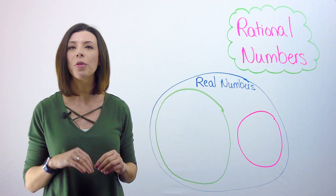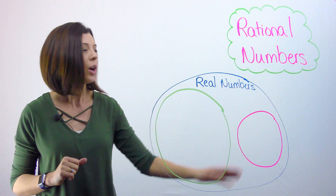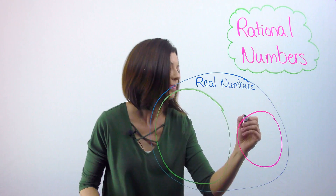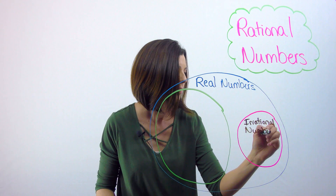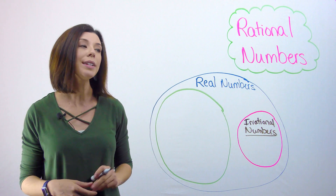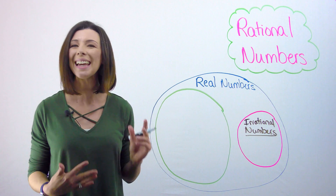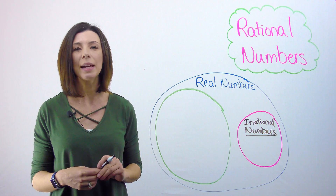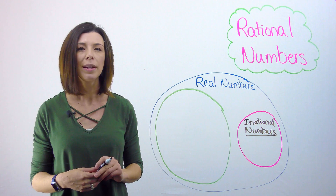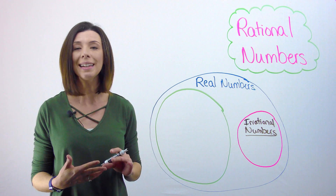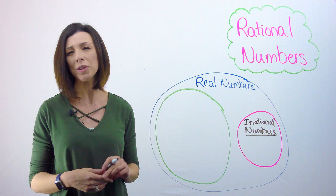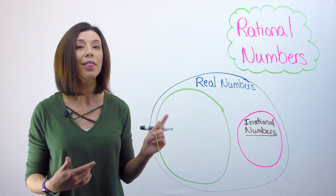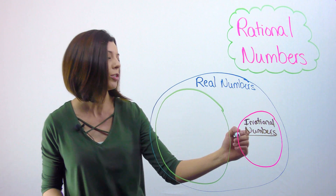Inside of real numbers, there are two categories. One is called irrational numbers. An irrational number is a real number that can't be expressed as a simple fraction. For example, the square root of 5 — I can get a decimal approximation for it, but I can't write it as a simple fraction. Therefore, it's an irrational number.